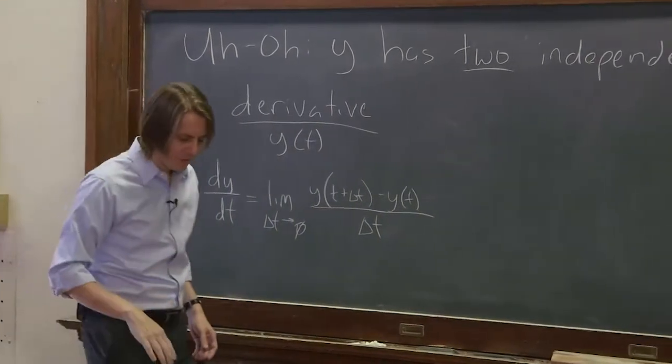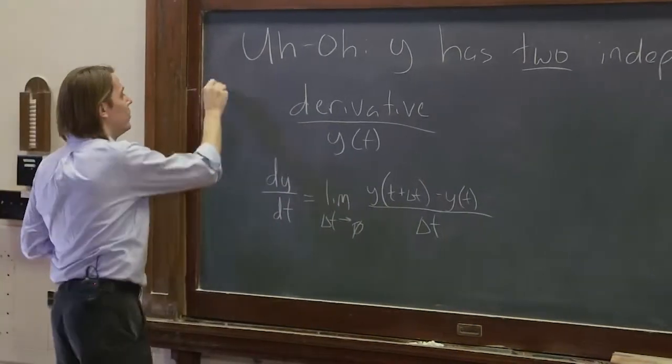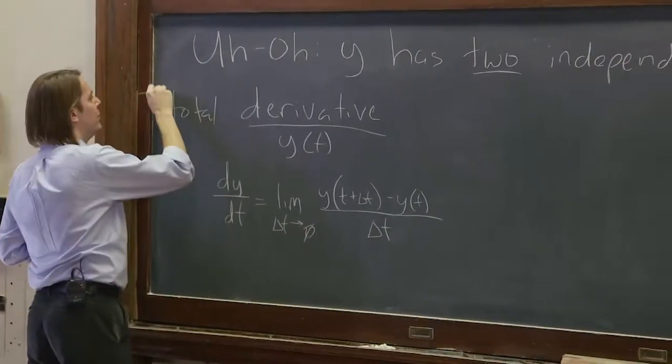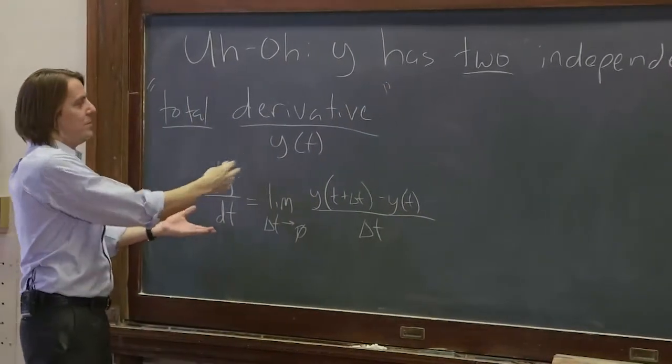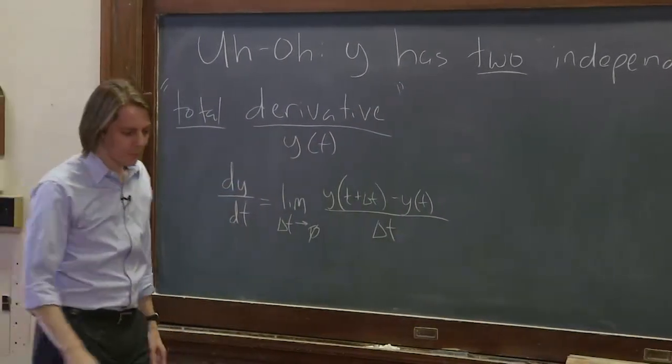So don't let the mathematicians make it so confusing that you don't know what they're talking about. So the total derivative. And it's called the total derivative because that's the biggest change. That's the only change you'll get, because it only depends on one thing.